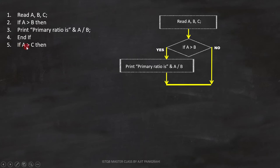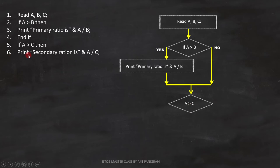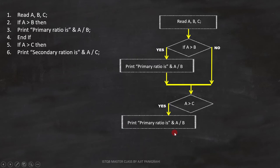Line number 5 is: if A is greater than C. Since it is a condition, we can represent it like this on the flowchart. Line number 6 is: print secondary ratio is A divided by C. Since it is a statement, we can represent it like this. The last line is where the condition on line number 5 will end, and this is how we represent it in the flowchart.